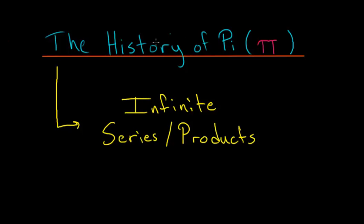The next stage in the history of pi deals with infinite series and infinite product representations of pi. The first one that was ever found is that pi divided by 4 is equal to 1 minus 1 third plus 1 fifth minus 1 seventh and so on. The next term would be plus 1 ninth.